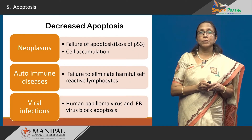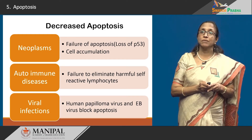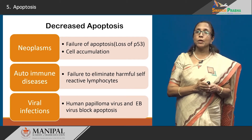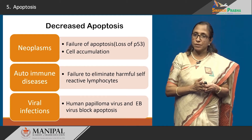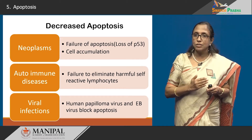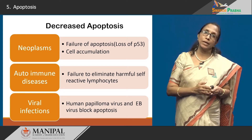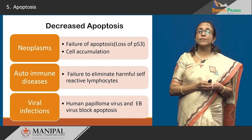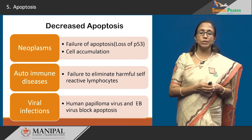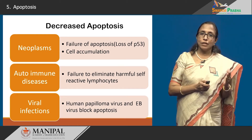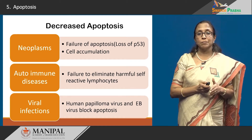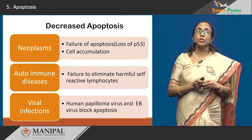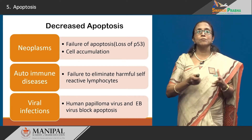We must also be aware of diseases caused by decreased apoptosis. Neoplasms occur because of failure of apoptosis — the loss of the tumor suppressor gene p53 causes mutations and cells to accumulate and proliferate. In autoimmune diseases, the failure to eliminate self-reactive lymphocytes leads to autoimmune disease. Even viral infections like human papilloma virus and EBV act as anti-apoptotic agents, blocking apoptosis and gaining freedom to proliferate in the body.